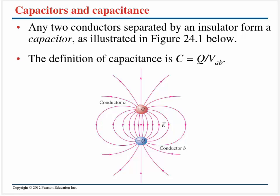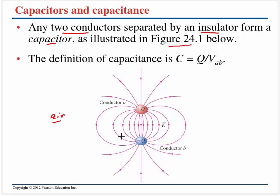So what is a capacitor? Essentially, any two conductors that are separated by an insulator form what we call a capacitor. In general, this will be two metal plates that are initially connected — some charge can flow between them, so electrons will go from one to the other. The magnitude of charge will typically be the same on each of the two conductors. Two point charges separated by air, air being an excellent insulator, form a very crude, rudimentary capacitor.